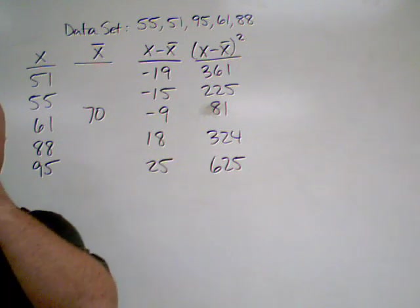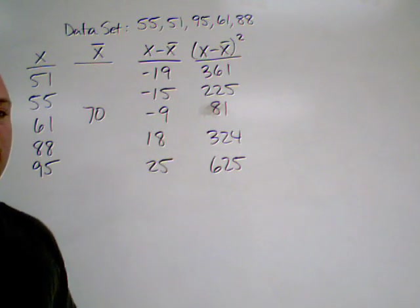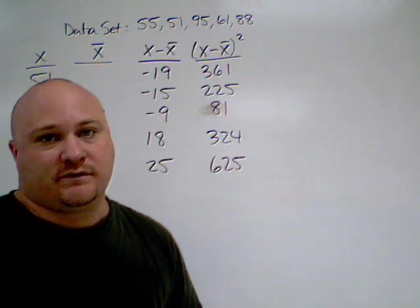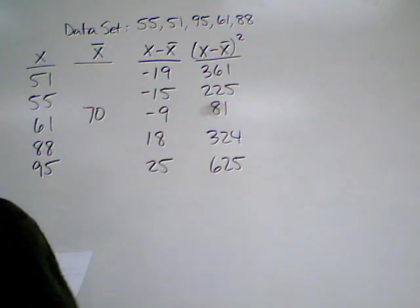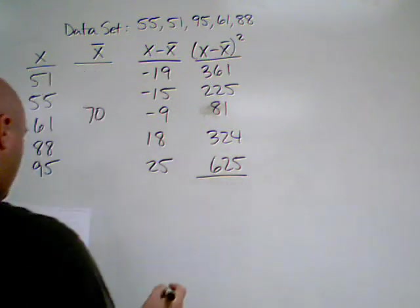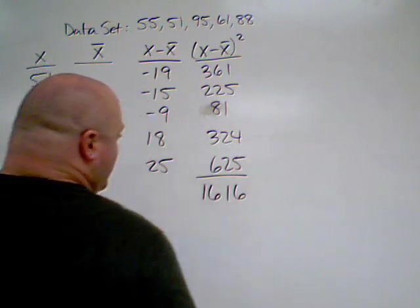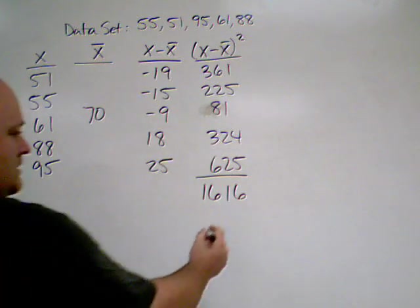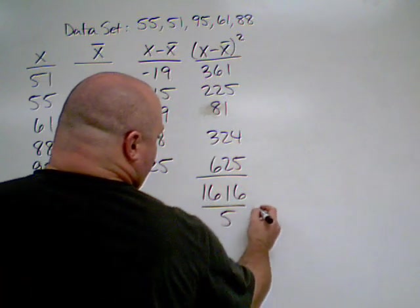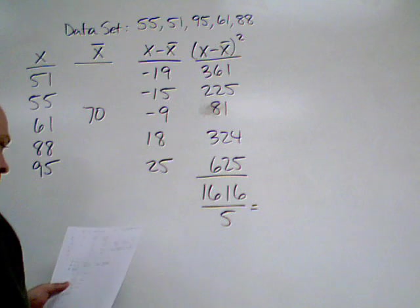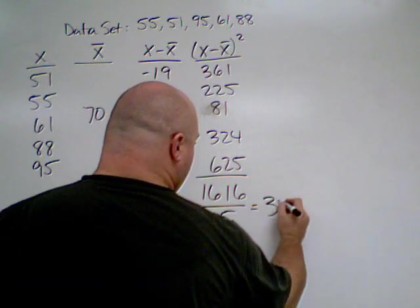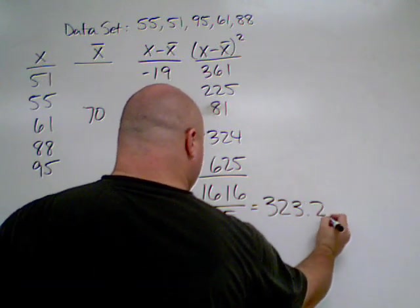Now, just like when we did mean absolute deviation, what we need to do is take the average of these. So, we need to add them all up, which I've already done, and we get 1616. Now, we're going to divide that again by 5.